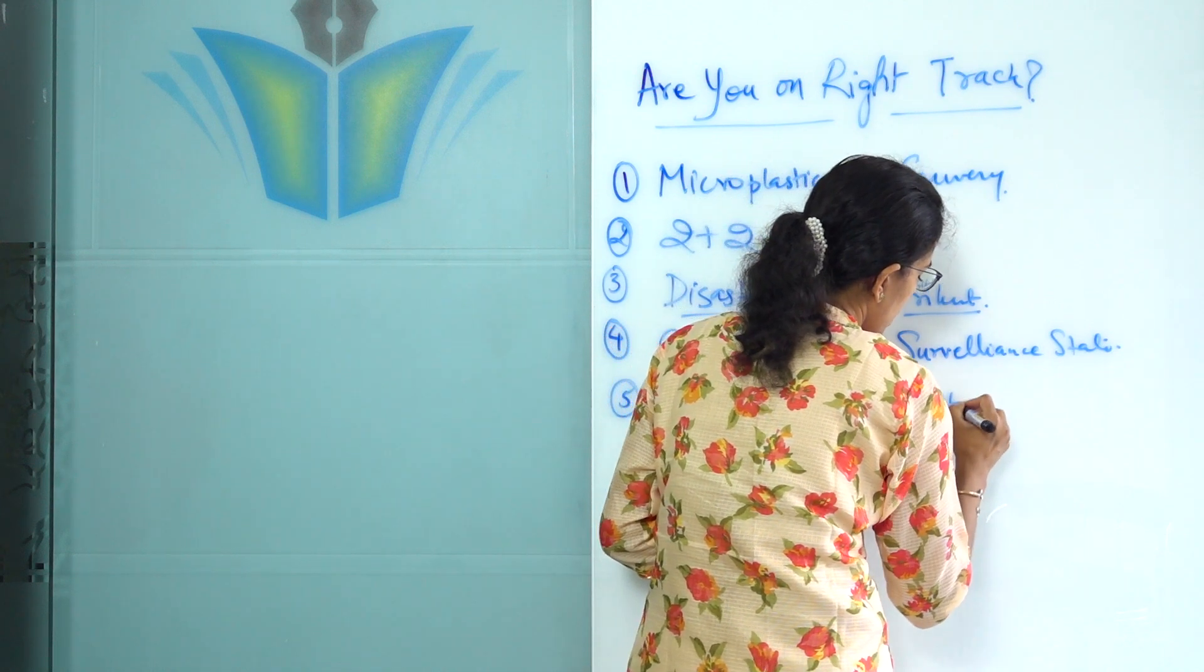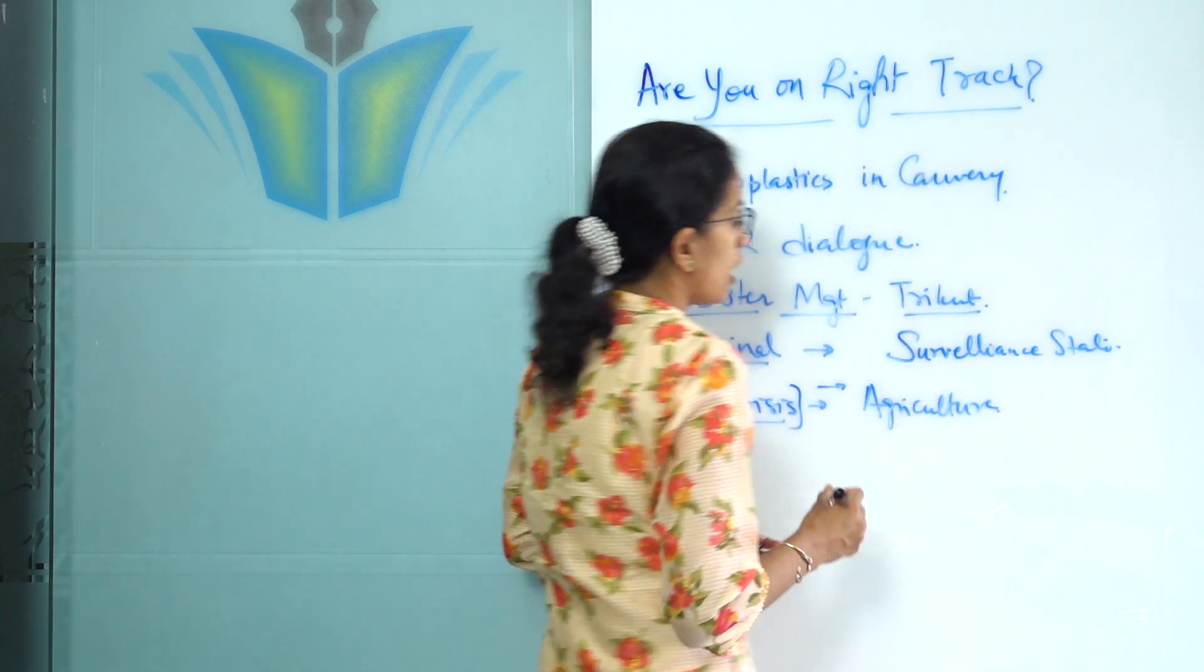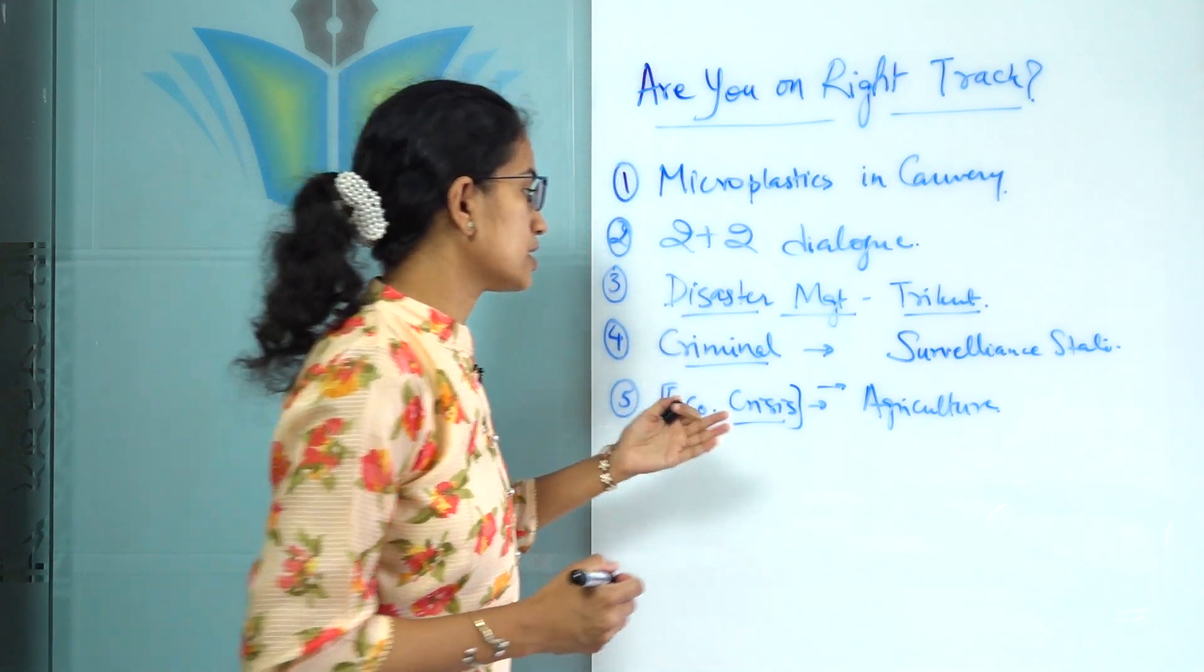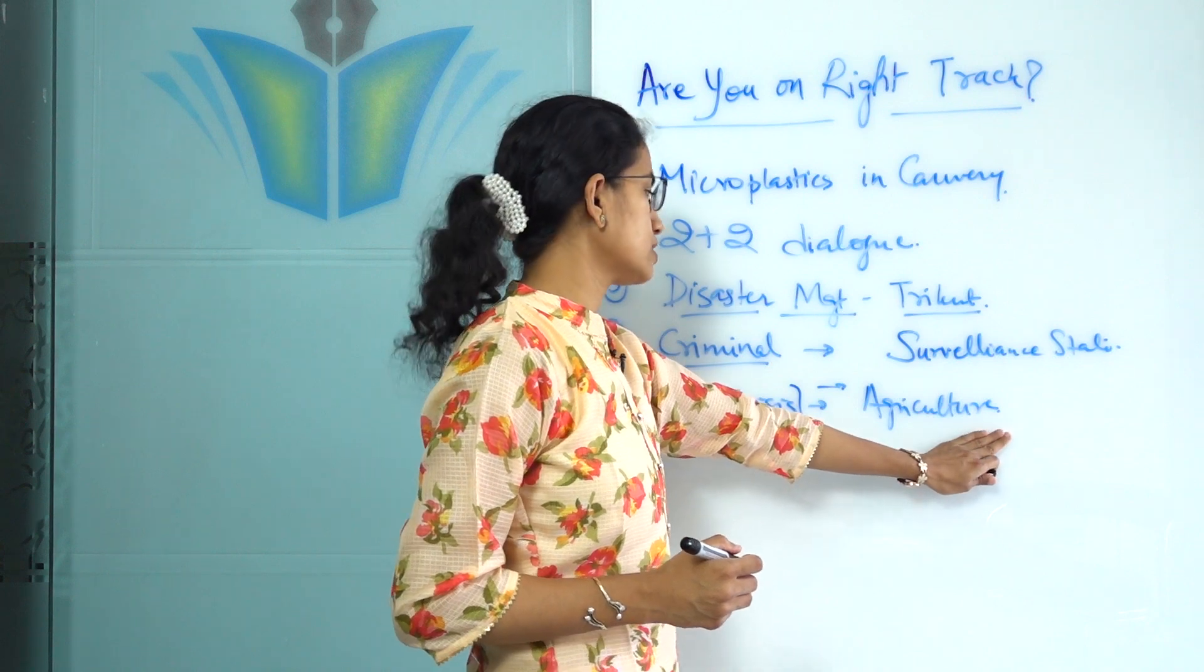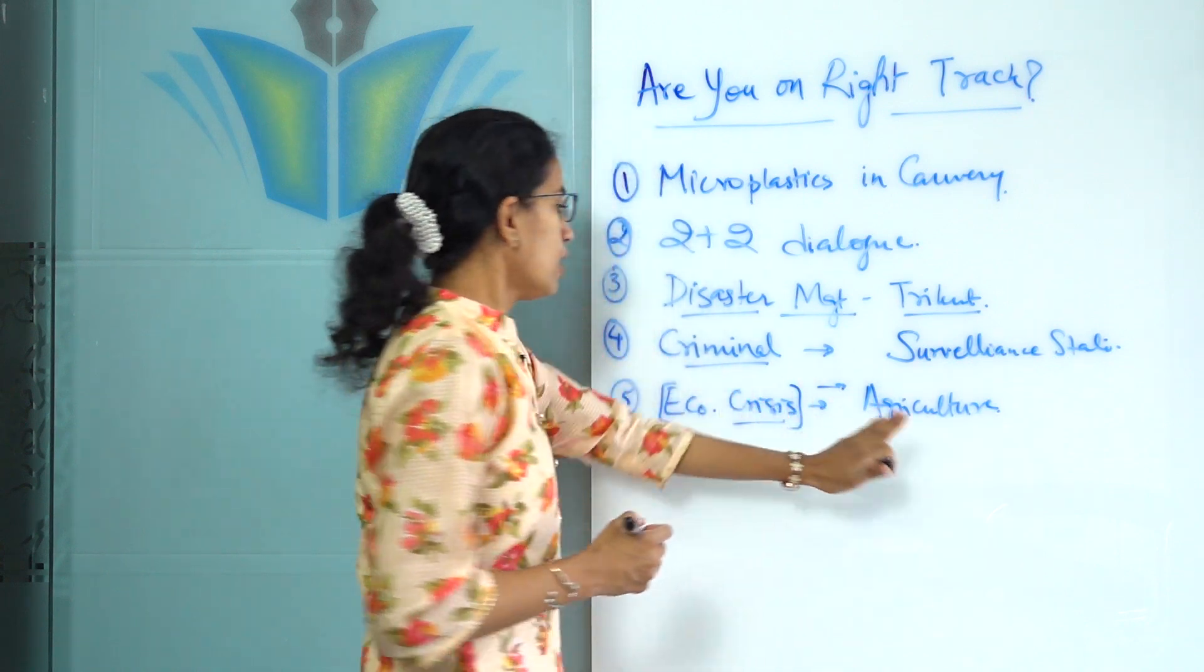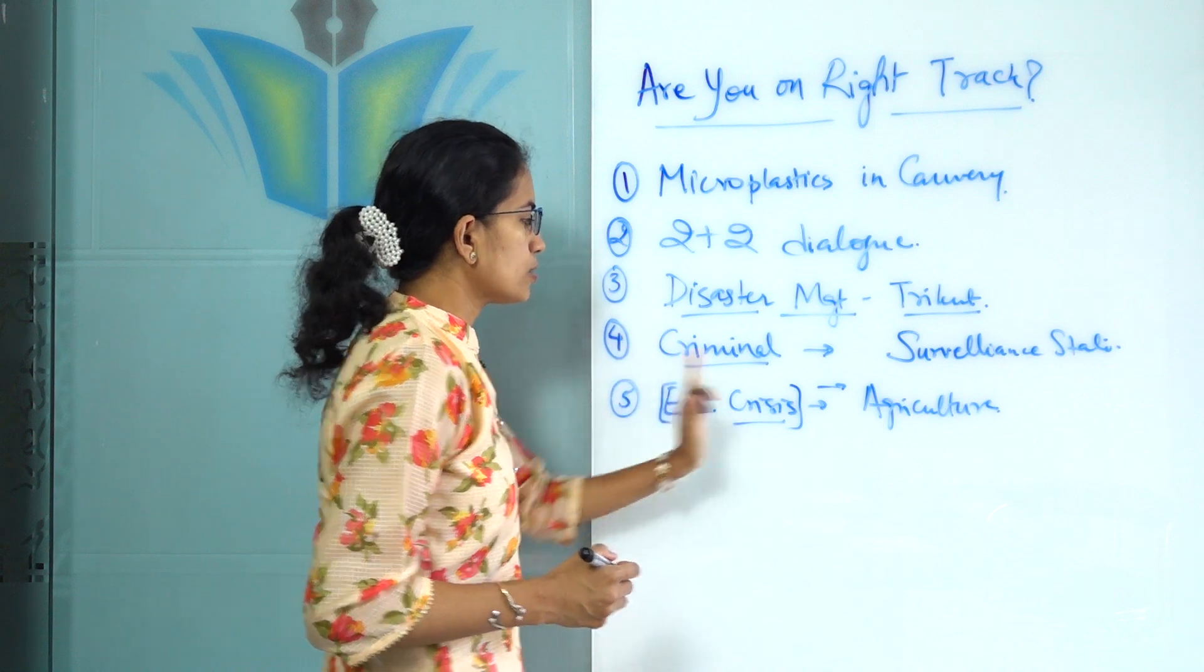Along with that comes agriculture, so agriculture and farming issues in Sri Lanka. What have been the perspectives for the same? Organic farming, how it was introduced and the implications on the common people there. So all those and related topics with Sri Lanka become important.